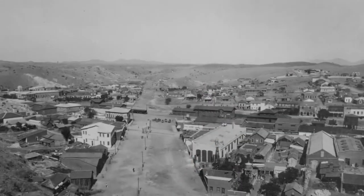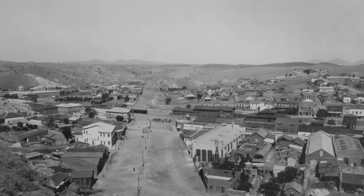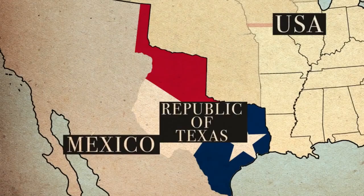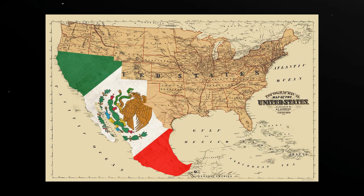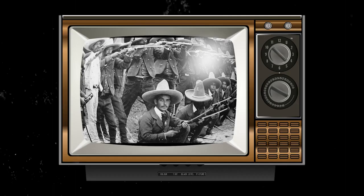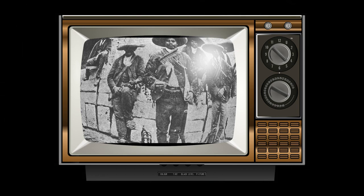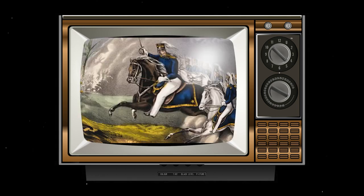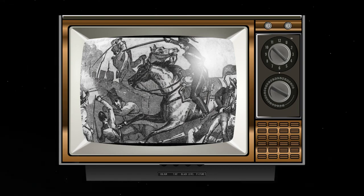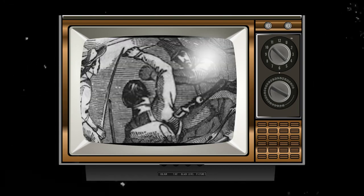For nearly a decade, the Republic of Texas existed as an independent nation before it was eventually annexed by the United States in 1845. This annexation further fueled tensions between Mexico and the United States, ultimately leading to the outbreak of the Mexican-American War in 1846.